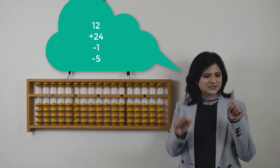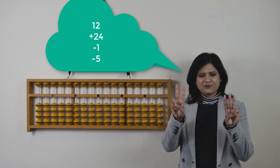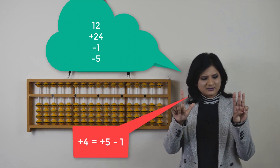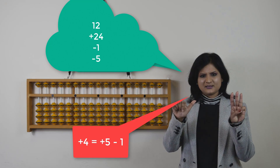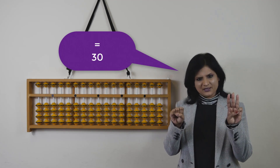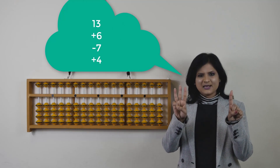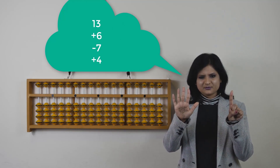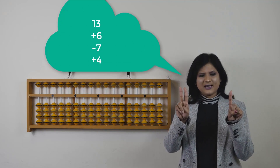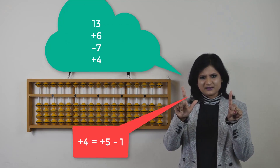So the first sum for the plus 4 combination is 12 add 24. Adding 4 here is: add 5, take away 1. The answer is — very good! Next sum: 13, add 6, take away 7, add 4. Add 4 is add 5 take away 1. This is how we add 4.